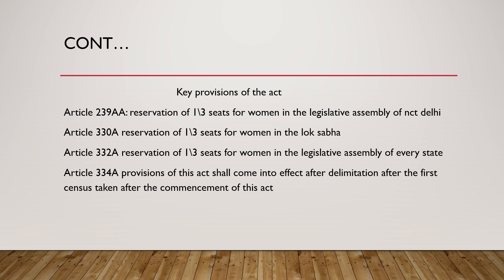What are the key provisions of this Act? It inserted Article 239AA, providing reservation of one-third seats for women in the Legislative Assembly of NCT of Delhi. It inserted Article 330A, which included reservation of one-third seats for women in the Lok Sabha. It also amended Article 330, where reservation for SCs and STs were given, to include one-third reservation for women in Lok Sabha. Similarly, it inserted Article 332A for reservation of one-third seats for women in the legislative assembly of every state.